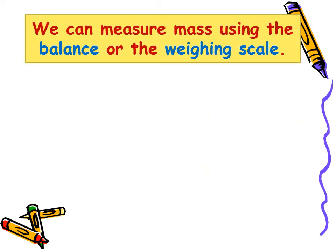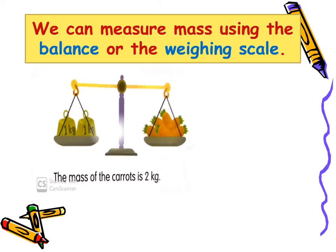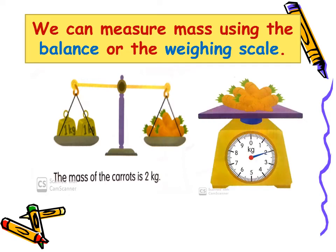We can measure mass using the balance or the weighing scale. Look at the picture. The mass of the carrots is two kg, which means two kilograms. On the scale, we have the same amount of carrots, which is equal to two kg — two kilograms.